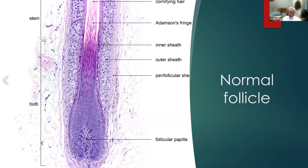Here is a closeup of one of our follicles. We have the hair, so-called Adamson's fringe, the inner root sheath, the outer root sheath, and this perifollicular sheath — which is important in some kinds of alopecia because it tends to be thickened in anagen hairs. We have the follicular papilla. And in this normal anagen hair, we have a nice ball-and-claw configuration of the hair follicle, and that's how we know it's an anagen hair.